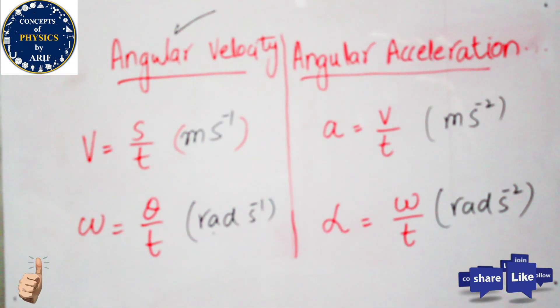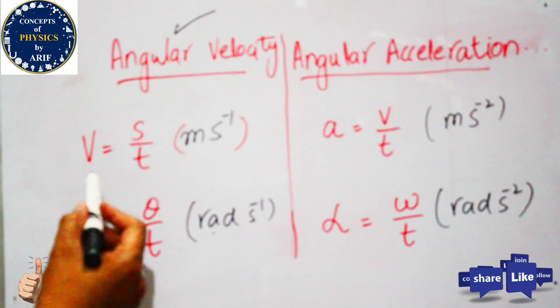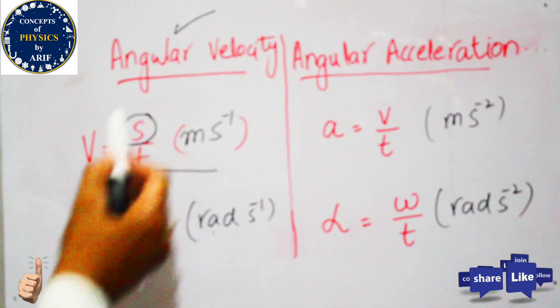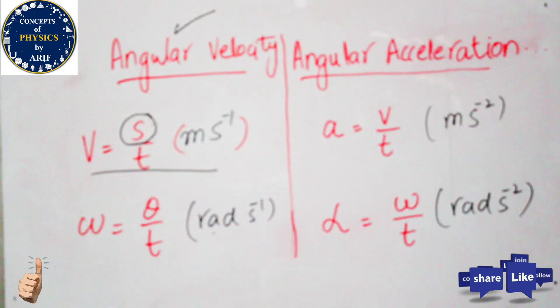First of all, we need to understand linear velocity. Linear velocity is the time rate of change of distance or displacement. Its unit is meter per second.